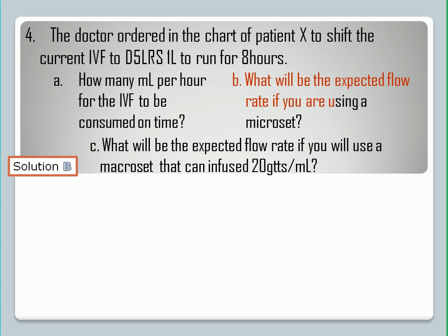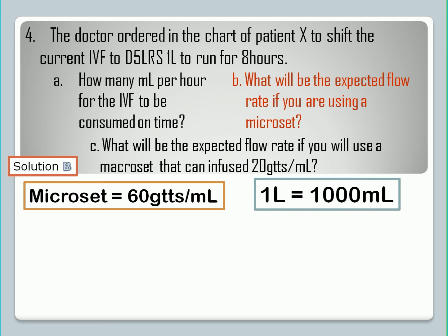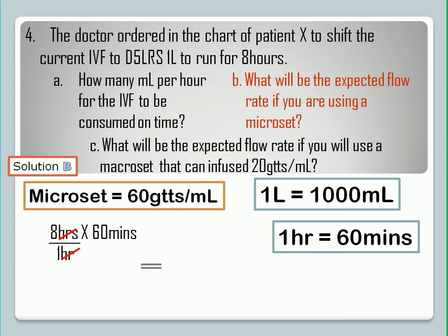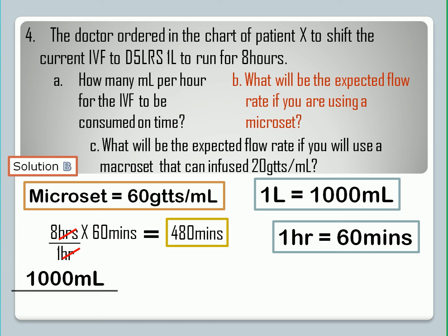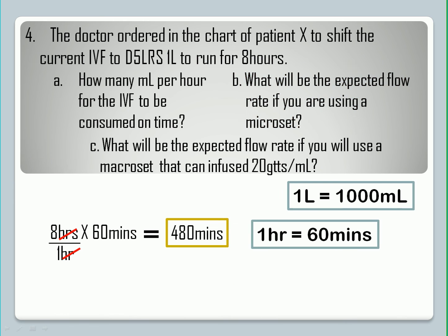Letter B solution: Since we will use a microset tubing, the expected drop factor is 60 drops per ml. We use 1,000 ml as the total volume. We convert 8 hours into minutes by multiplying by 60, since 1 hour equals 60 minutes, giving 480 minutes. So: 1,000 ml divided by 480 minutes, multiplied by the drop factor of 60, equals 125 drops per minute. This means that using a microset, there should be 125 drops in one full minute.